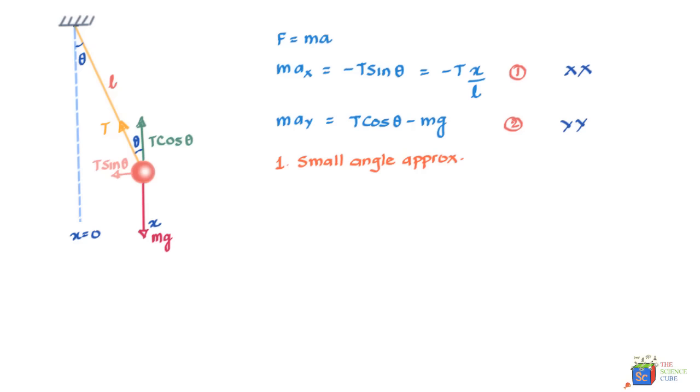We'll assume that the ball does not move beyond, say, 10 degrees. Smaller the angle, the better it is. If this is the case, then the cos of the angle will be close to 1.